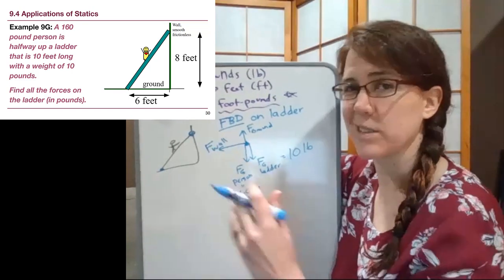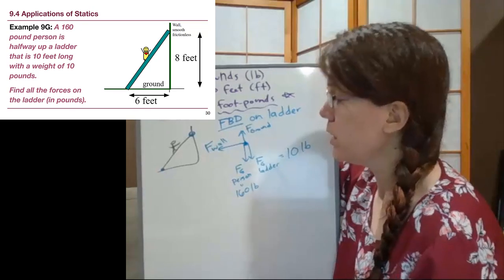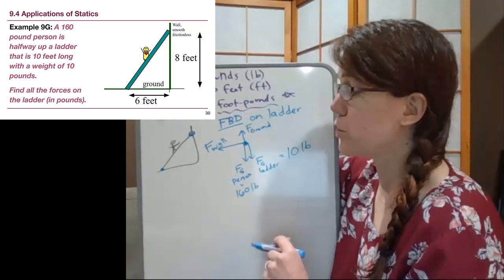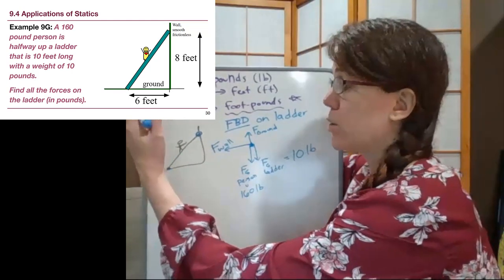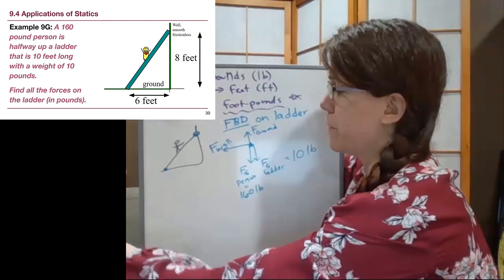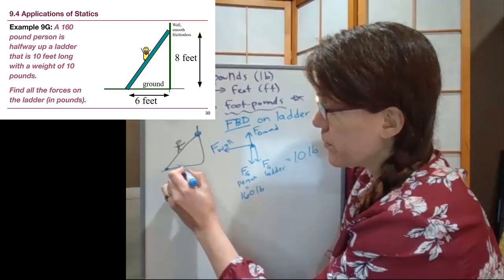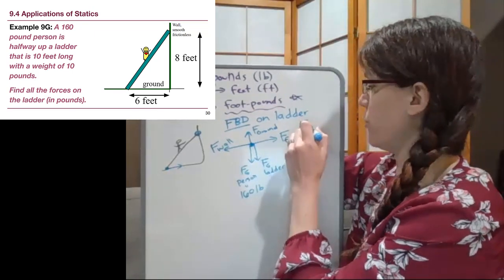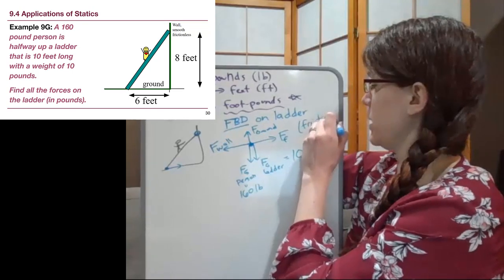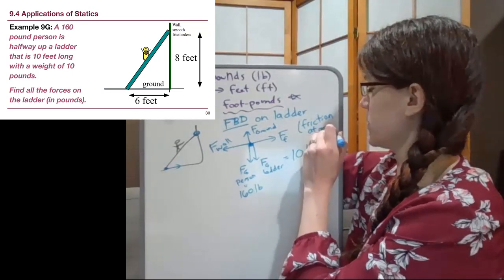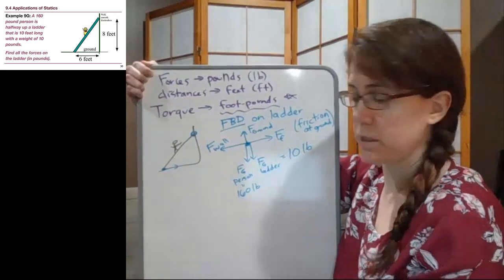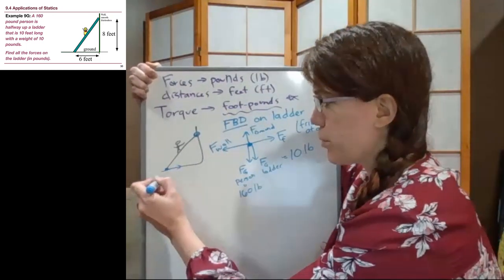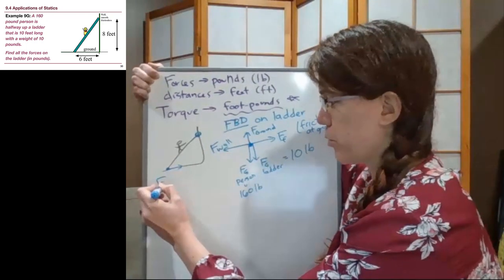But we are not told that the floor is frictionless, because think about what would happen if there was no friction on the floor. If this were icy, the ladder would slide out and the person would be in trouble. So there is a force of friction preventing that ladder from sliding - a force of friction acting at the ground. Those are all of the forces in our problem.